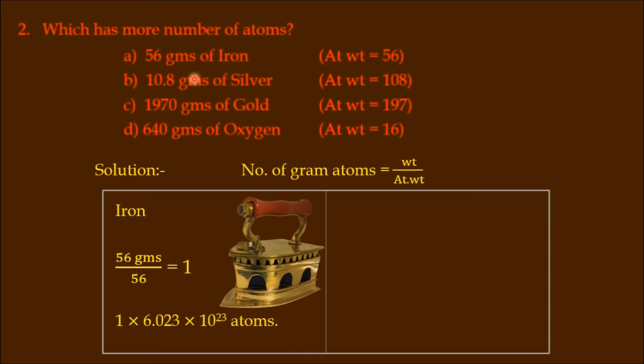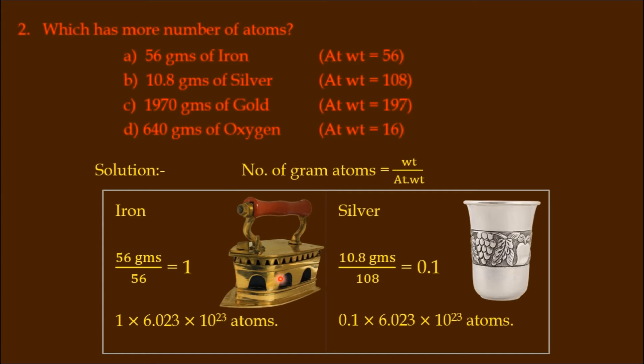Let us compare iron and silver first. This is an iron box. The weight of the iron box is 56 grams by atomic weight 56, which is 1 gram atom. In the case of silver, atomic weight is 108.